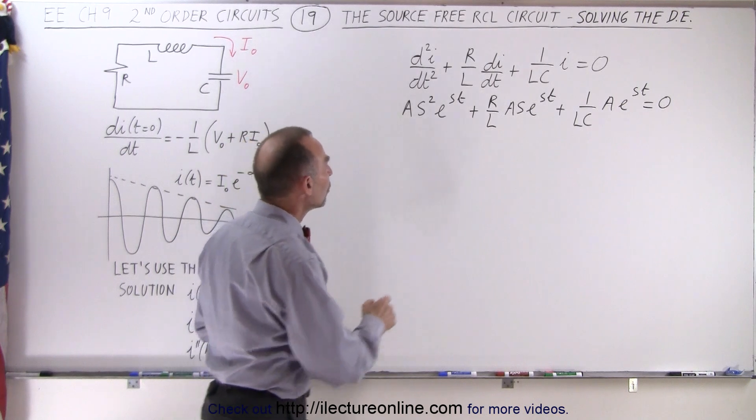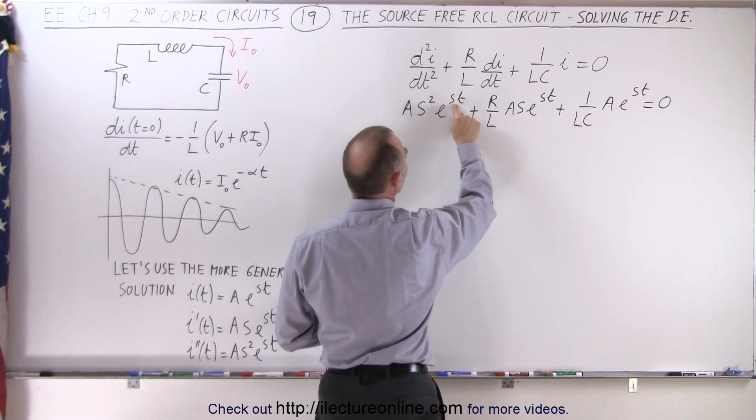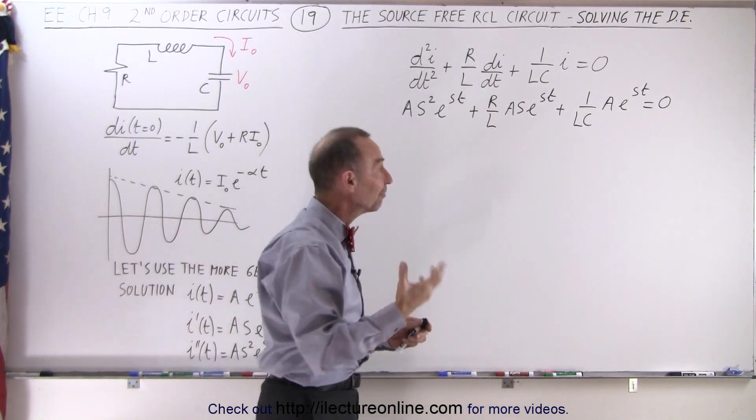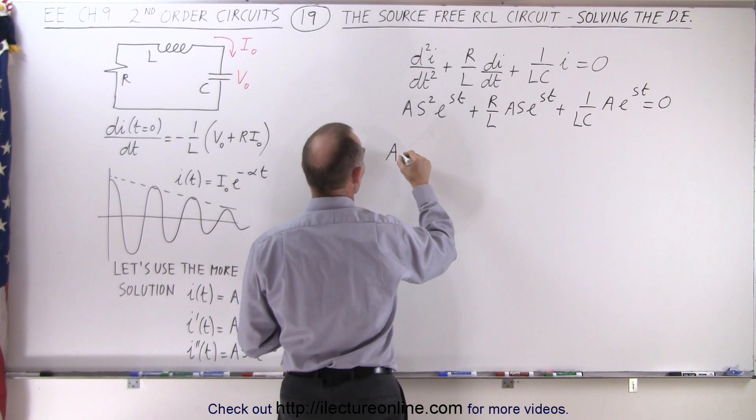Now we can take a look at that, and notice that every term has an a in it, and every term has an e to the st. So we can go ahead and factor out an a and an e to the st. When we do that, our equation becomes as follows.